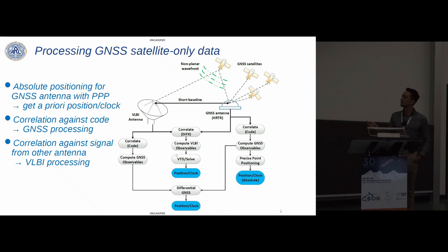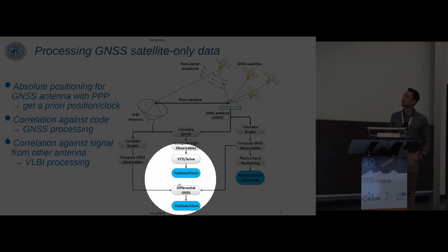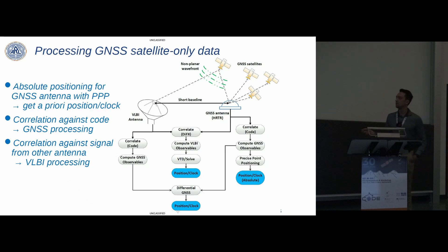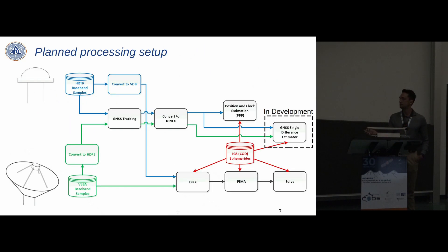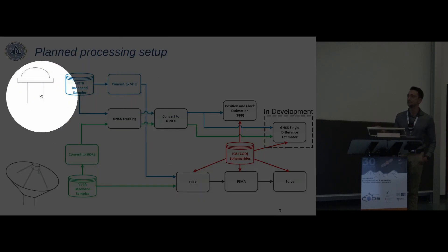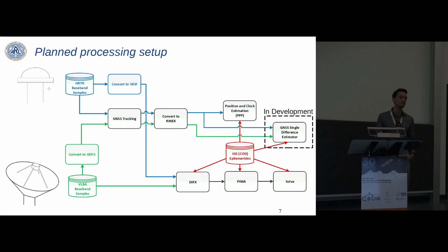The VLBI analysis path uses software correlation in DiFX to compute group delay and phase delay — fundamentally interferometric observables — giving another differential positioning solution estimating the local tie vector. This should agree with the GNSS solution, providing a way of checking ourselves. Correlation against the code leads to GNSS processing; correlation against the signal from the other antenna leads to VLBI processing.